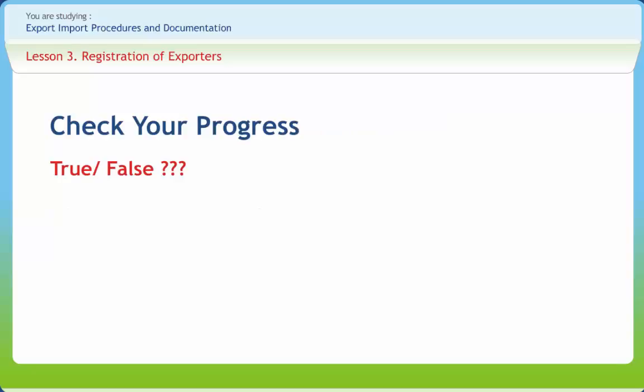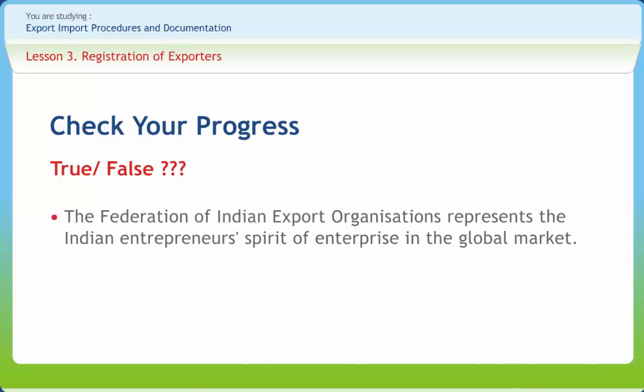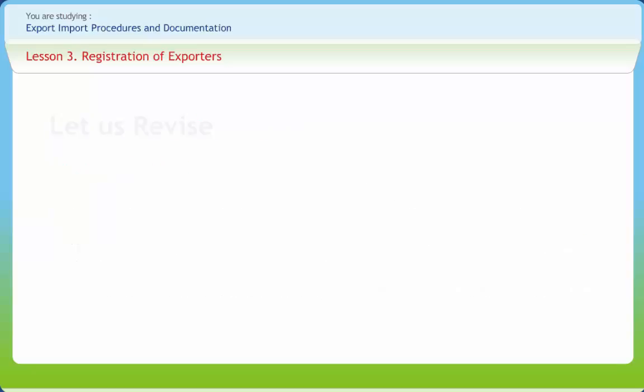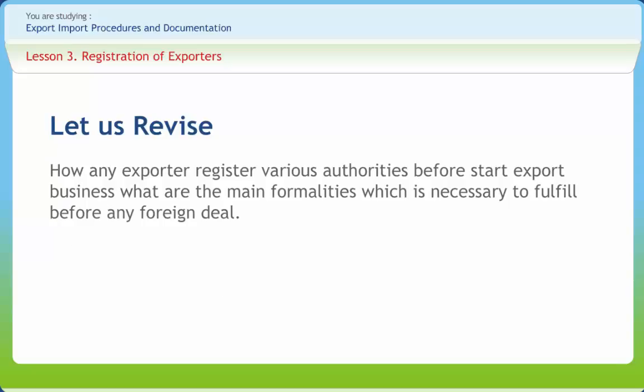Let us check our progress with true or false statements. The Federation of Indian Export Organizations represents the Indian entrepreneur spirit of enterprise in the global market — right or wrong? Right. The customs authorities will not allow you to import or export goods into or from India unless you hold a valid IPC number — right or wrong? Wrong. In this lesson you learned about how any exporter registers with various authorities before starting export business, and what the main formalities are which are necessary to fulfill before any foreign deal.